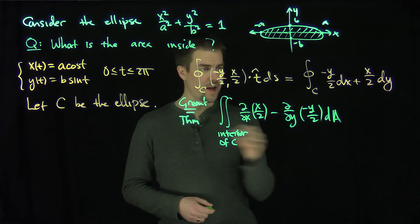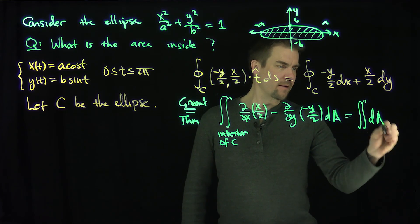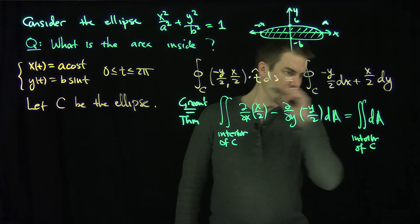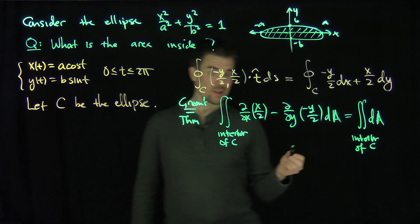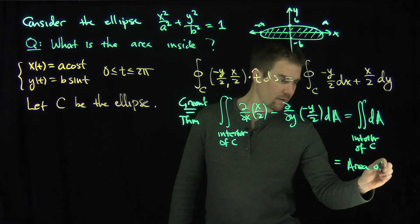Now, of course, this is 1 half and that's negative 1 half, so that adds up to 1. So this is just the double integral dA over the interior of the ellipse. So that's just going to be the area of the interior.